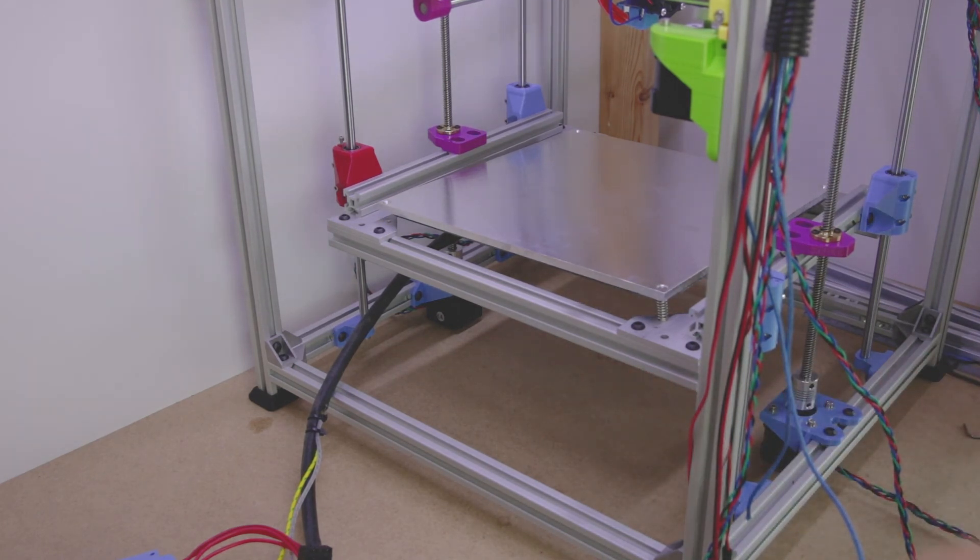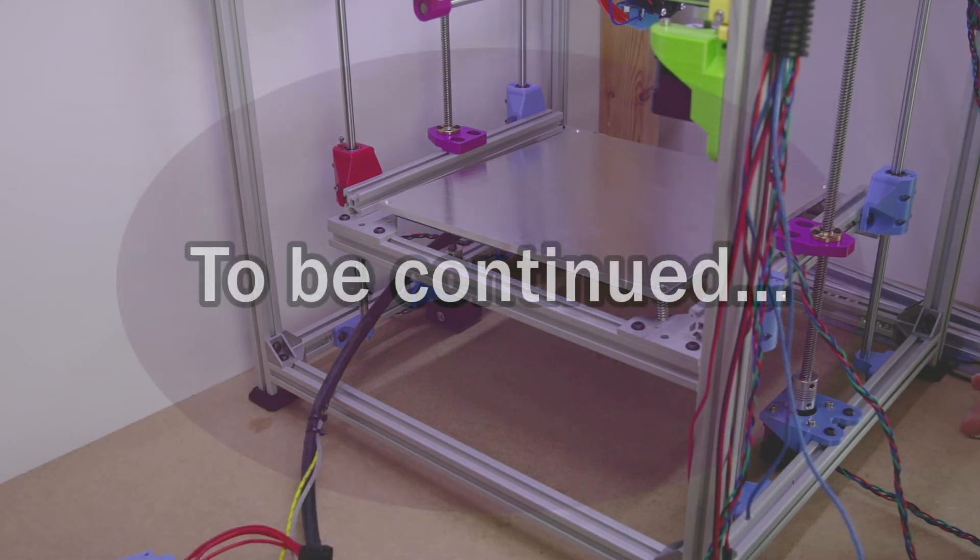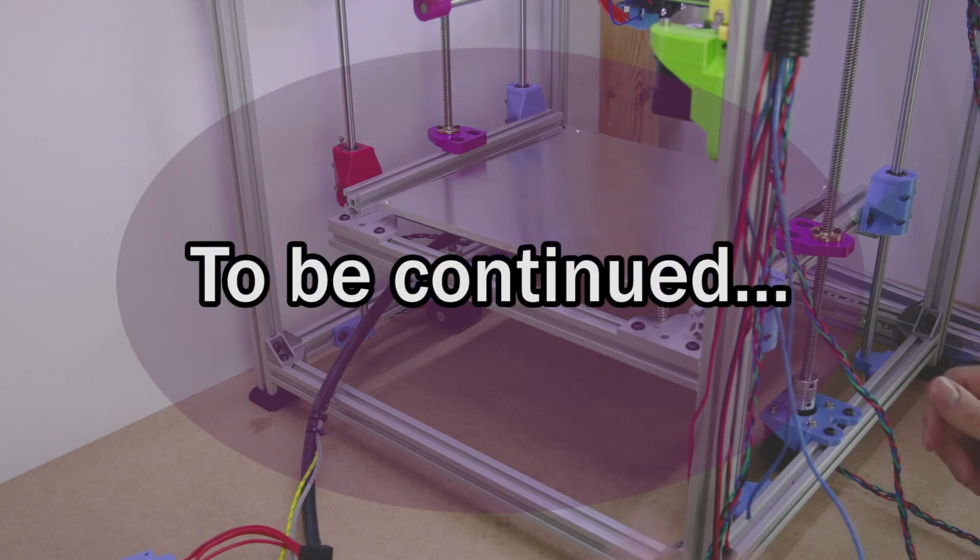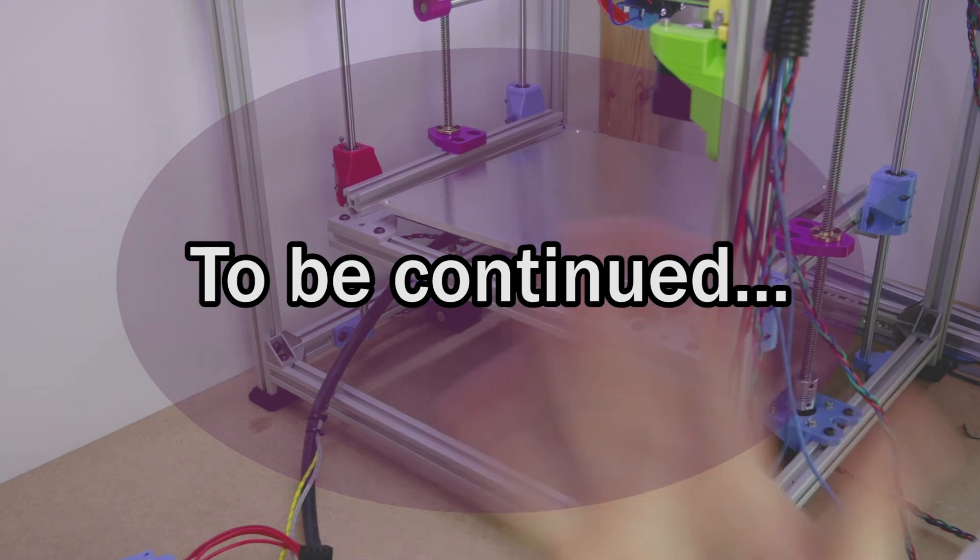So that now covers all the beds, how to mount it, the power control circuit, the power supply, and how that all connects into the control board as well. In the next video, we'll probably go through some more of the electronics. We'll have them on the end stops, and some other things like that. Yes, let's do that. Okay, bye-bye.